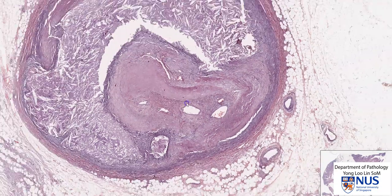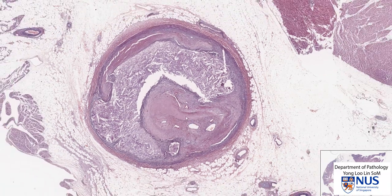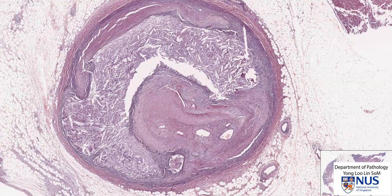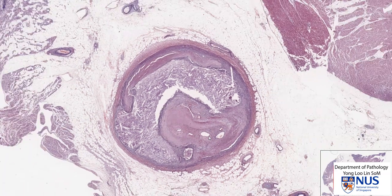This patient had survived the initial myocardial infarction with the occlusion of the coronary artery, and now this is part of the healing process — organization of the thrombus — where there is a lot of collagen being laid down and a little bit of recanalization in order to re-establish some blood flow. This is an example of an organized thrombus with an underlying atheromatous plaque.